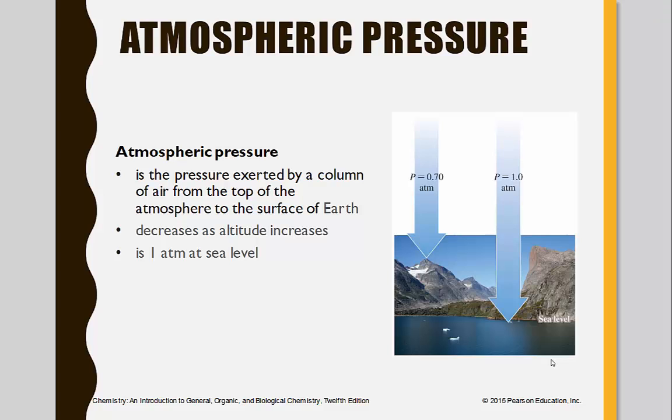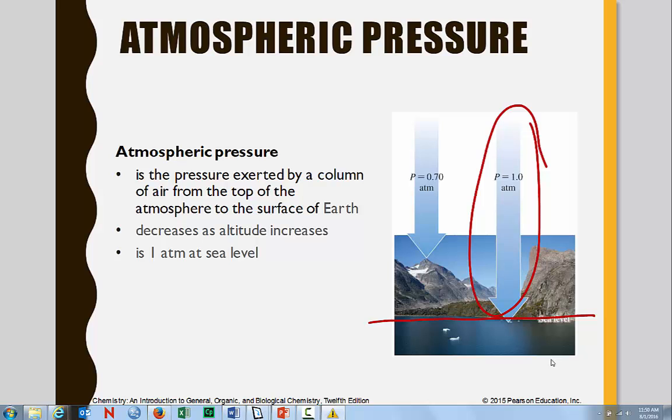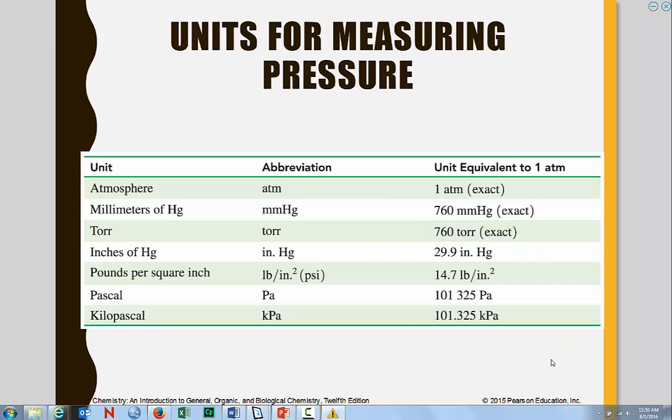So atmospheric pressure is the pressure exerted by the column of air from the top of the atmosphere to the Earth's surface. So at sea level, the pressure is 1 atm. As we get higher, there's fewer gas particles and so because of that, the gas pressure is decreased.